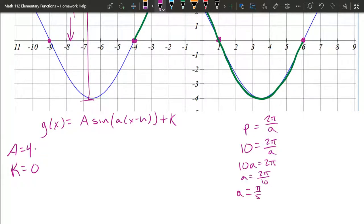So a is pi over five. Alright, so that's a right there. The only thing we have left to do is get h. H is the horizontal shift.